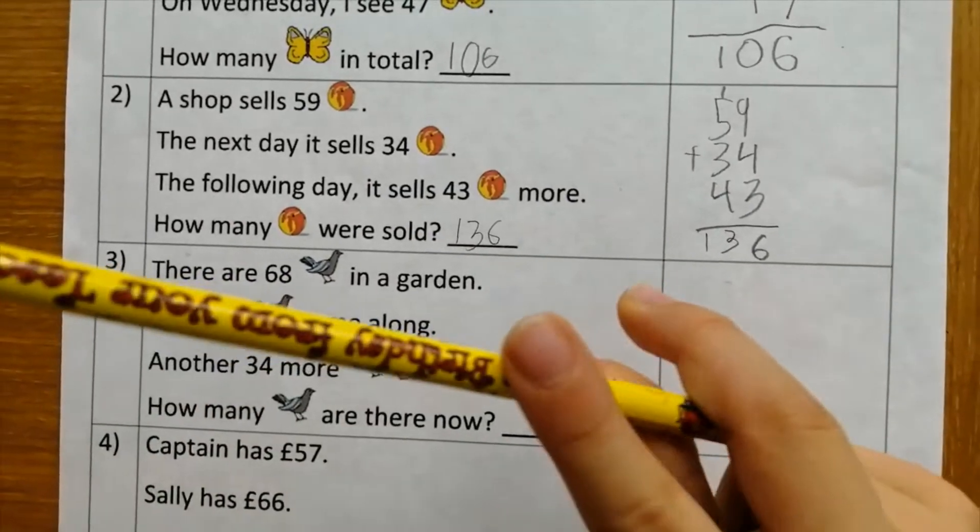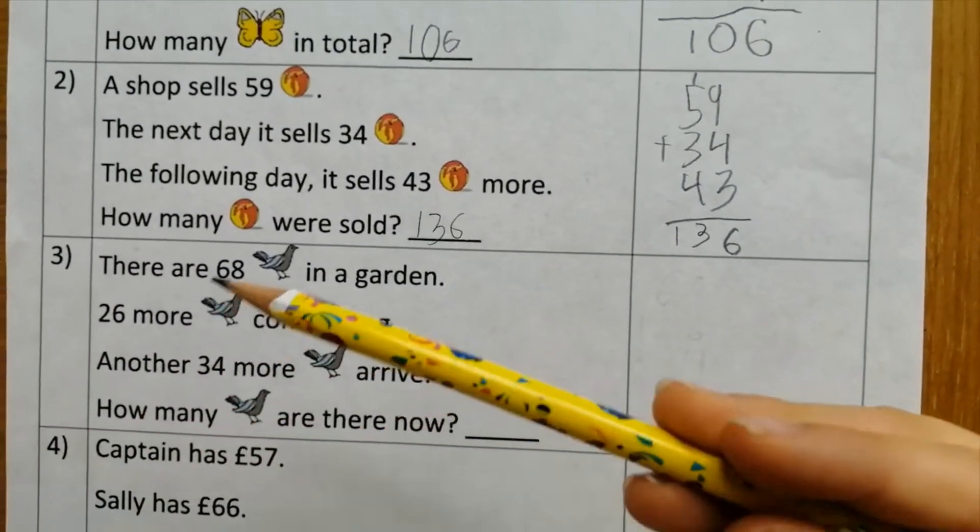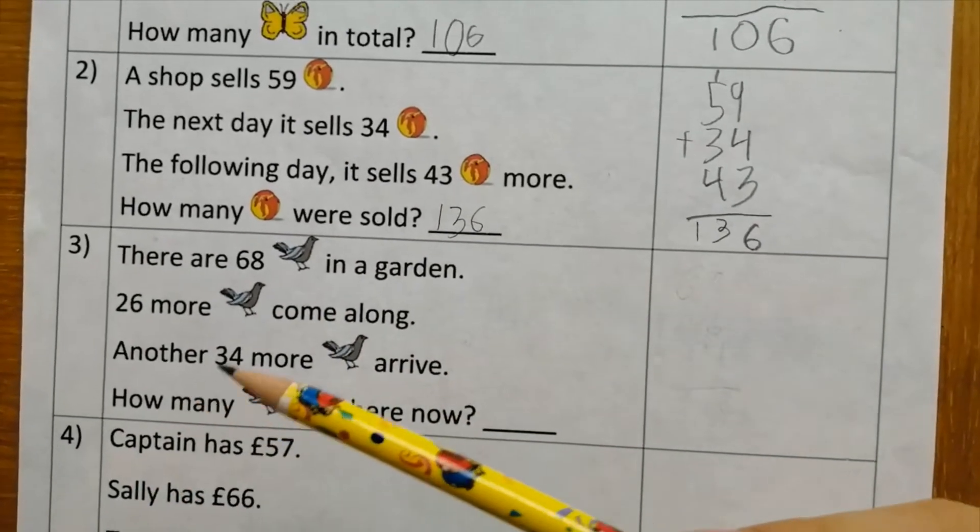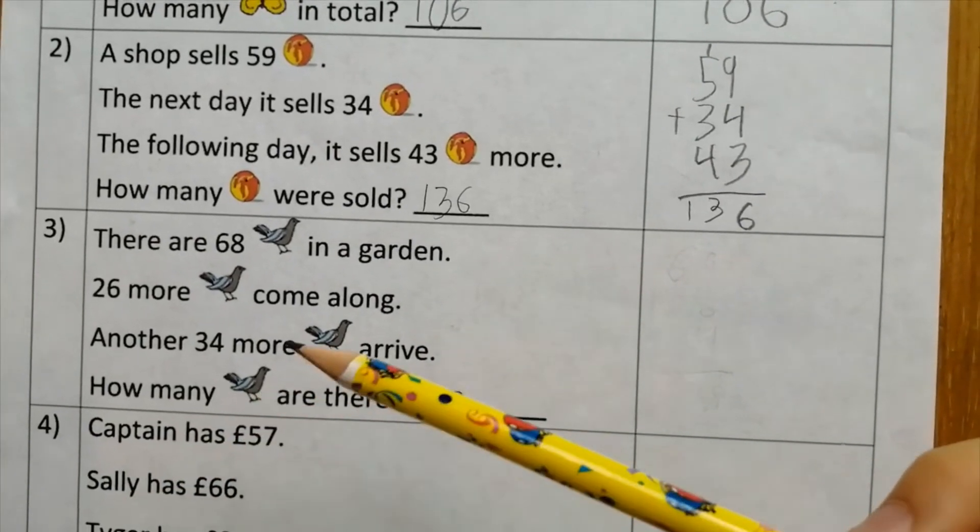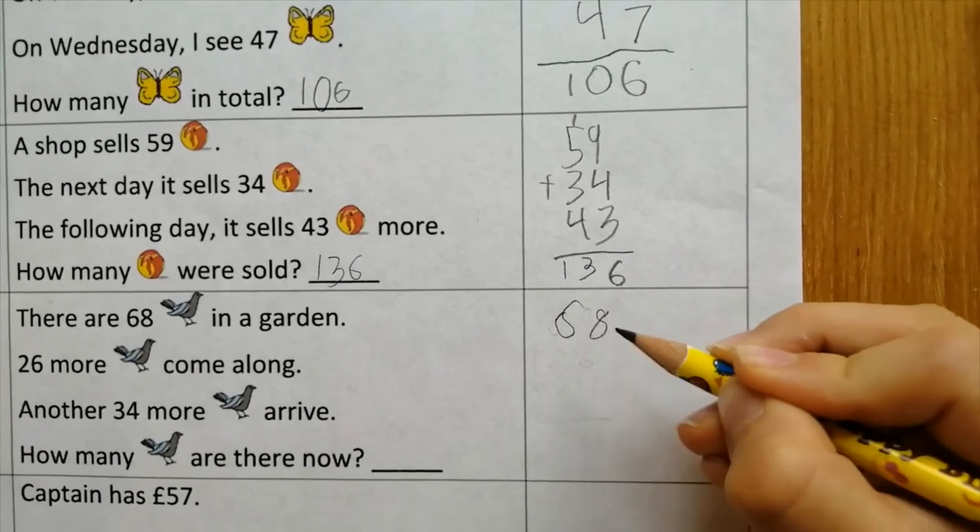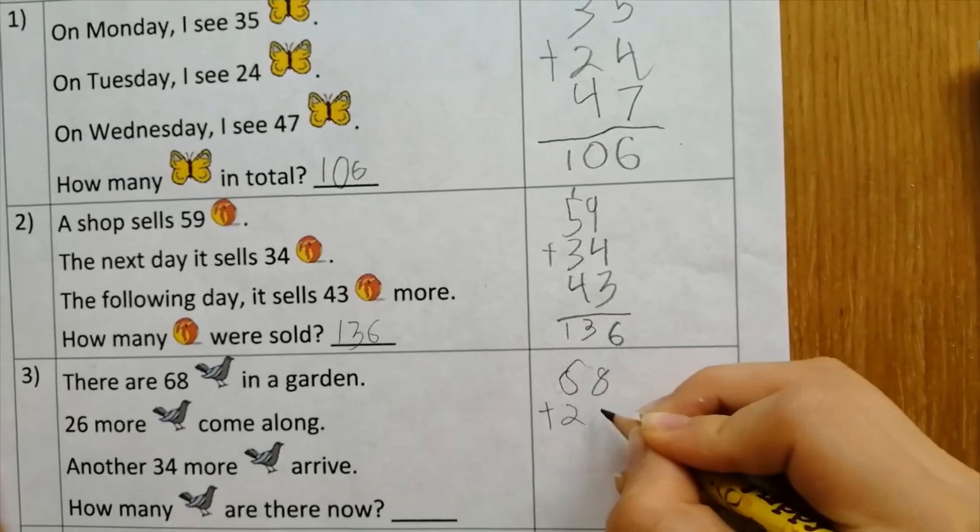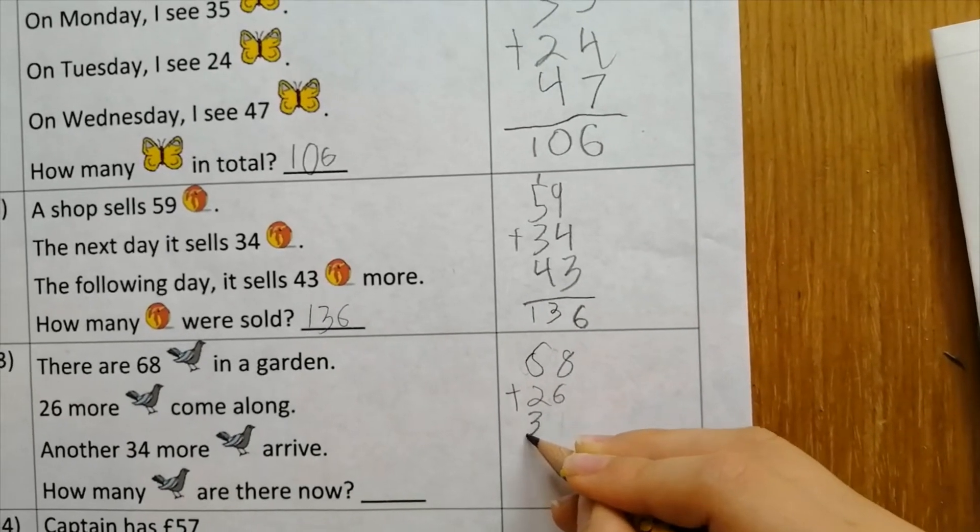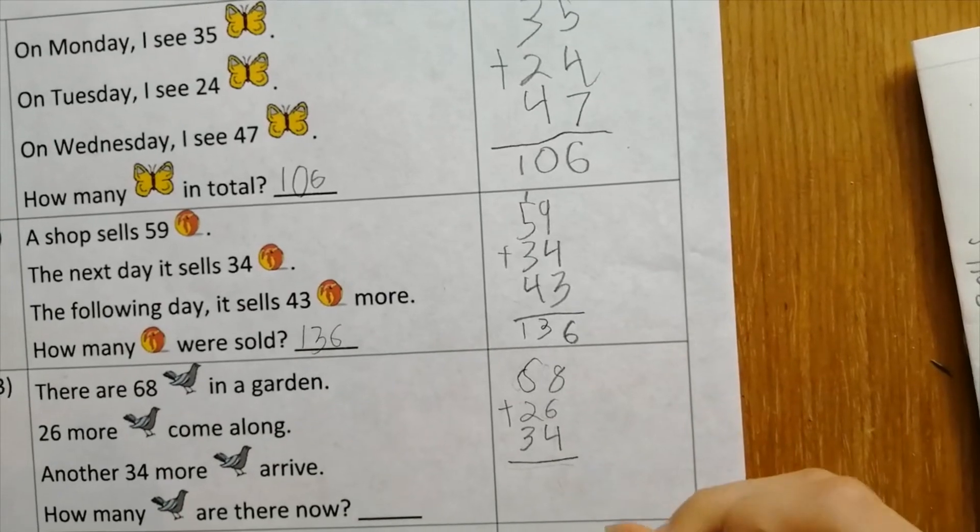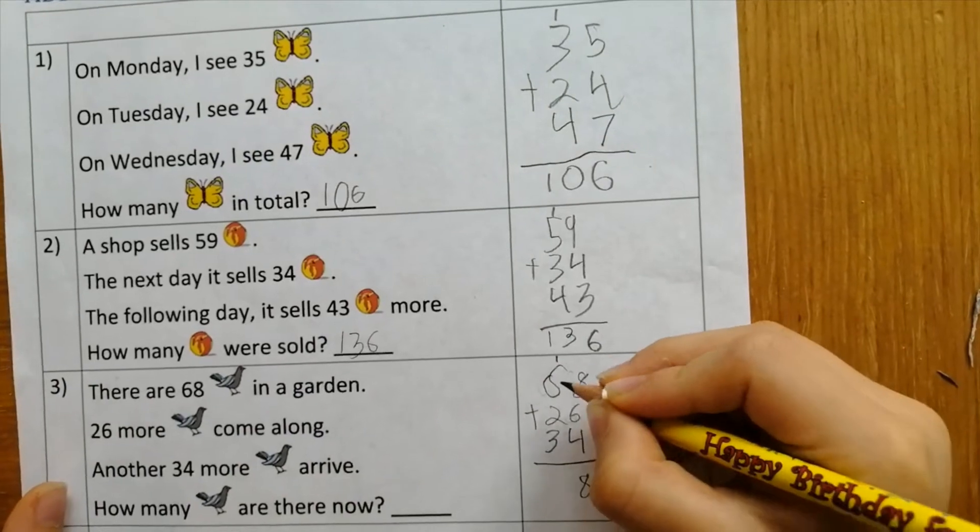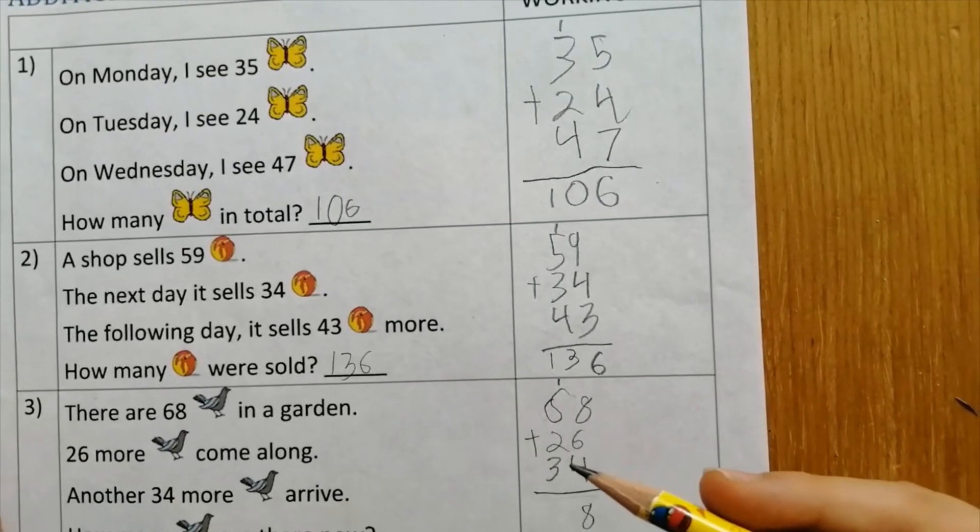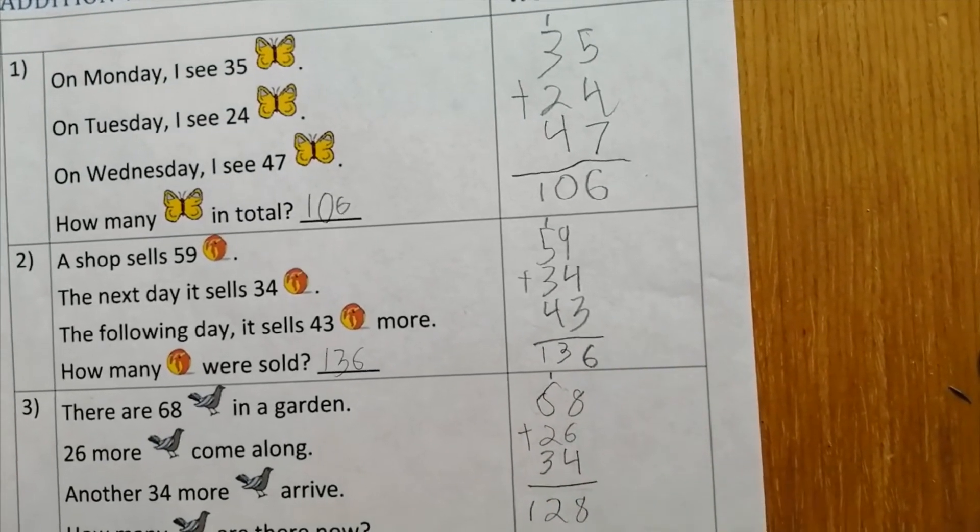And now I'm going to do number three. There are sixty-eight birds in the garden. Twenty-six more birds come along. And then thirty-four more birds arrive. How many birds are there now? So sixty-eight plus twenty-six plus thirty-four equals. Eight plus six is fourteen plus four is eighteen. One plus six is seven plus two is nine plus three is twelve. One hundred and twenty-eight birds.